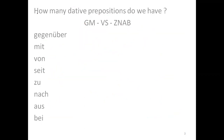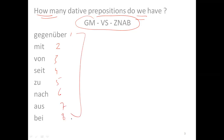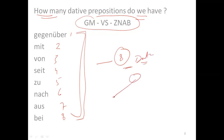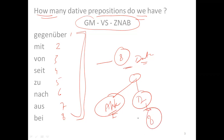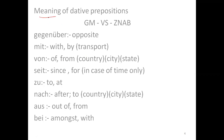So how many dative prepositions do we have? As we learned from 'GM vs Janab' — one, two, three, four, five, six, seven, and eight. There is one more preposition that falls under dative, but it is not so important. The important ones to focus on are these eight. Similarly, you should keep in mind how many prepositions fall under accusative.